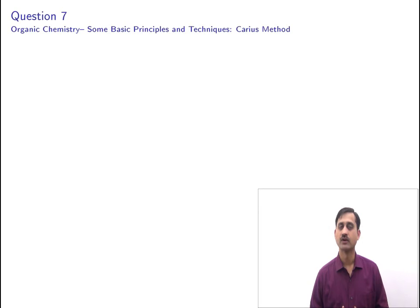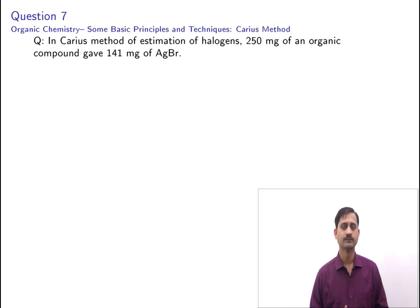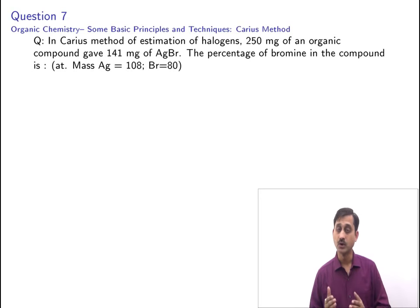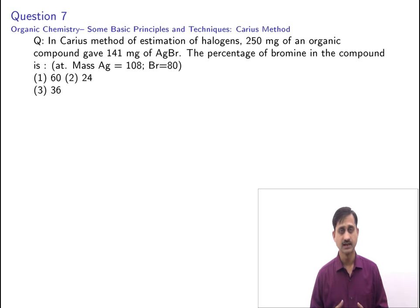The next question is from organic chemistry, basic principles and techniques — the Carius method. The question states: in Carius method of estimation of halogens, 250 milligrams of an organic compound gave 141 milligrams of AgBr. The percentage of bromine in the compound is (atomic mass of silver = 108, atomic mass of bromine = 80). Options: 60, 24, 36, or 48.